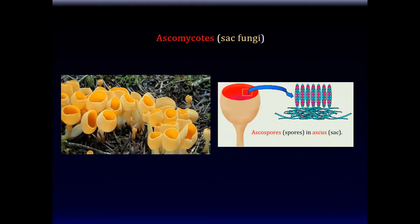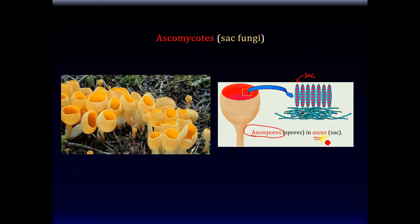They are called sac fungi not because they look like a sac — clearly the morel doesn't look like a sac. They're called sac fungi because they make spores in something called the ascus, which is Latin or Greek for sac. So they make their spores in structures called sacs. Their spores are called ascospores because they come from the sacs, the ascus.